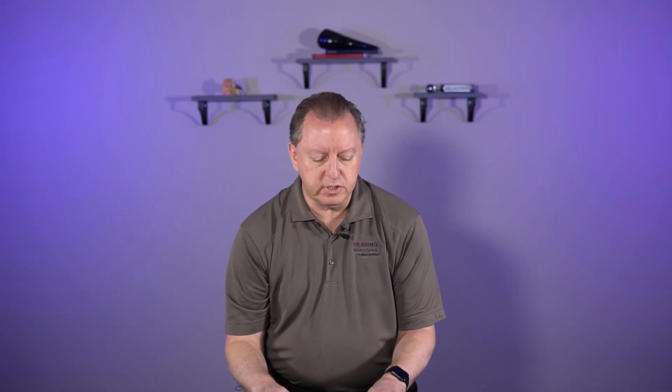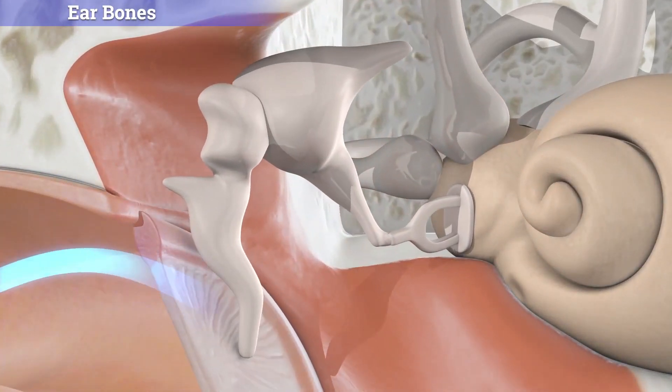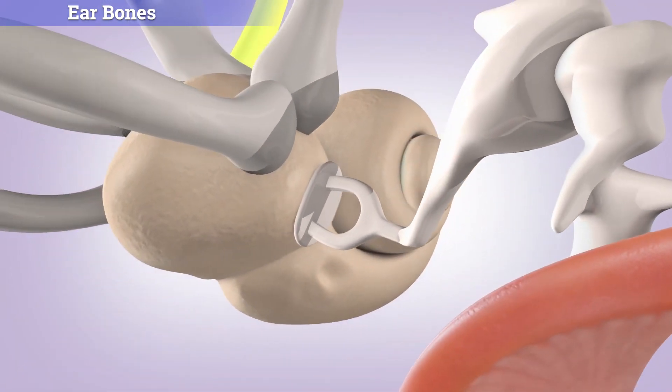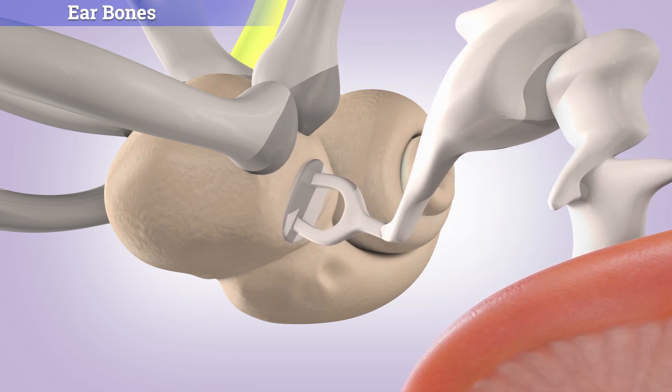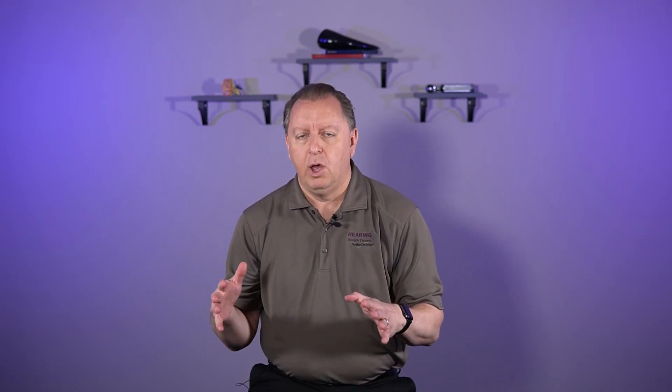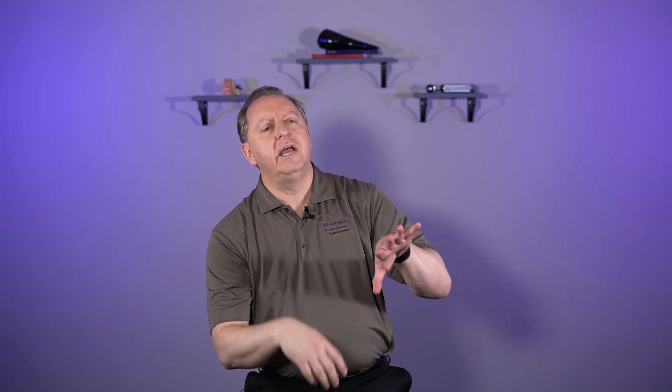Let's talk about the bones a bit. In the bone spaces, the bones move in that pumping piston motion. There are three bones, and in those areas there are two different types of disorders: one is a fixation of the bones, and the other is called disarticulation.